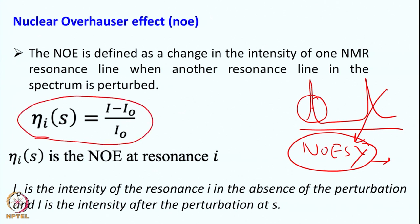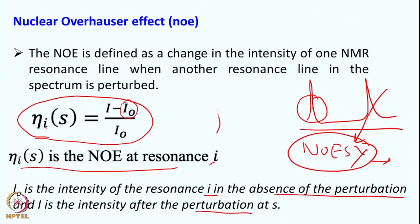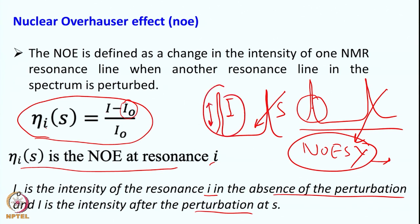Because of this perturbation, there is an enhancement or decrease in the signal of a particular nuclei. This is given by the formula: eta of S due to perturbation in I equals the difference in intensity. I0 is the unperturbed intensity, I is the intensity when we perturb the signal, and the ratio (I minus I0) divided by I0 is actually the NOE of any resonance. So we are perturbing signal S and looking at how the intensity of I is changing — whether increasing, decreasing, or altered — and that is given by this eta factor.